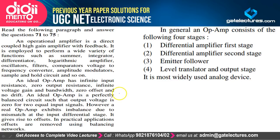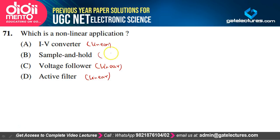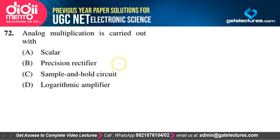From the paragraph on op-amp applications: which is a non-linear application? I-to-V converter, voltage follower, and active filter are linear. Sample and hold circuit — involving capacitor charging and discharging — is a non-linear application. Option B is correct. Analog multiplication is carried out with a logarithmic amplifier. Option D is correct.